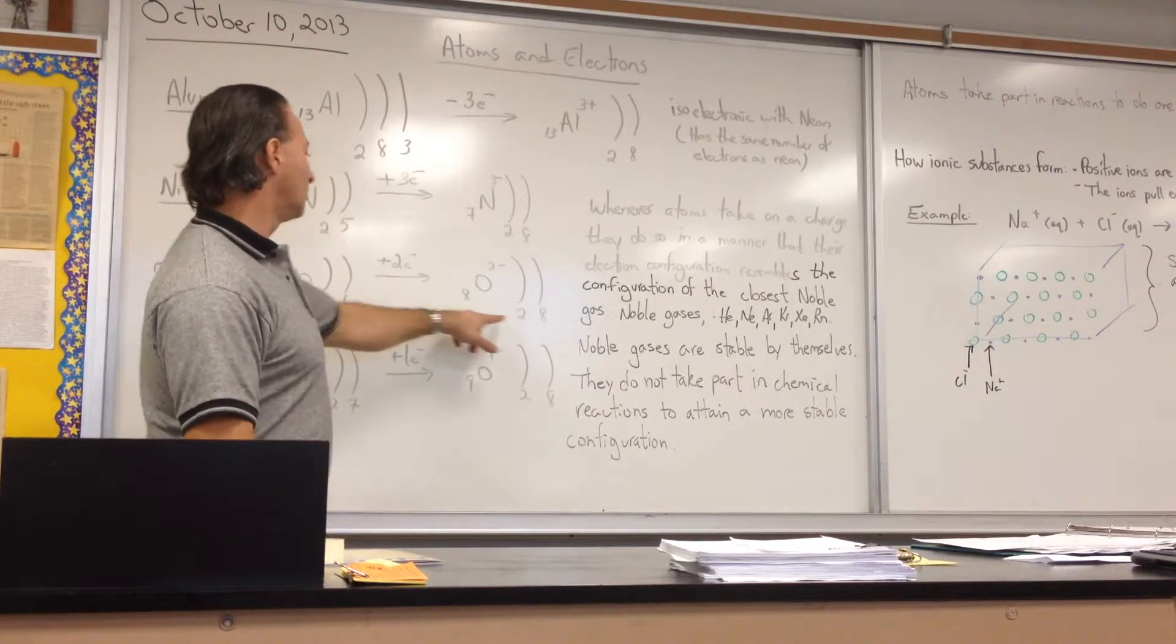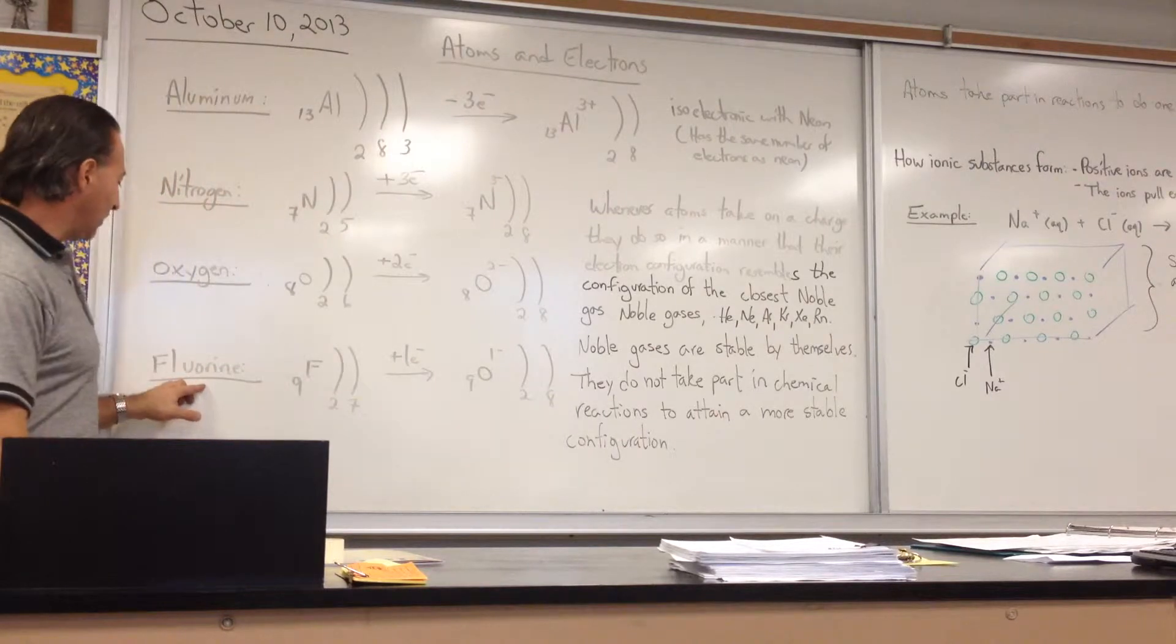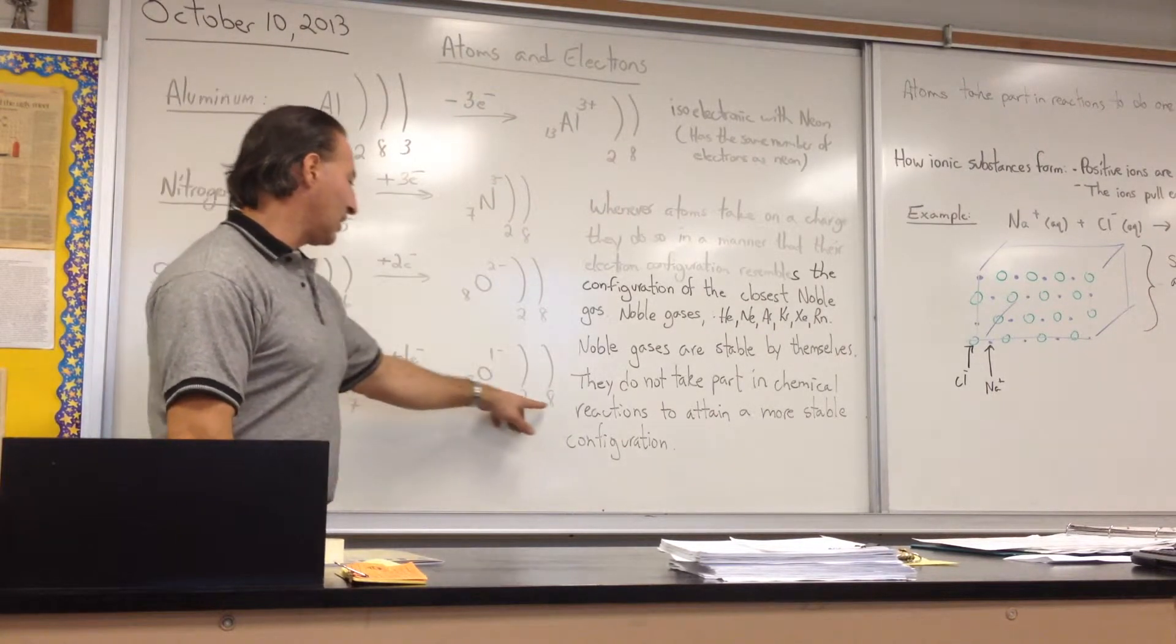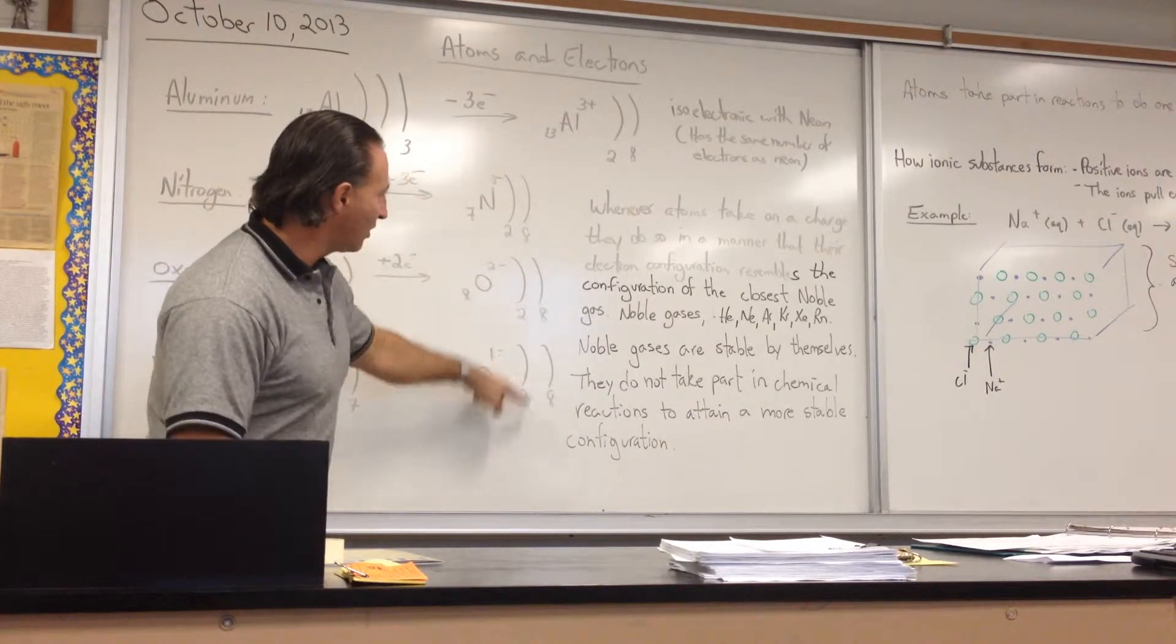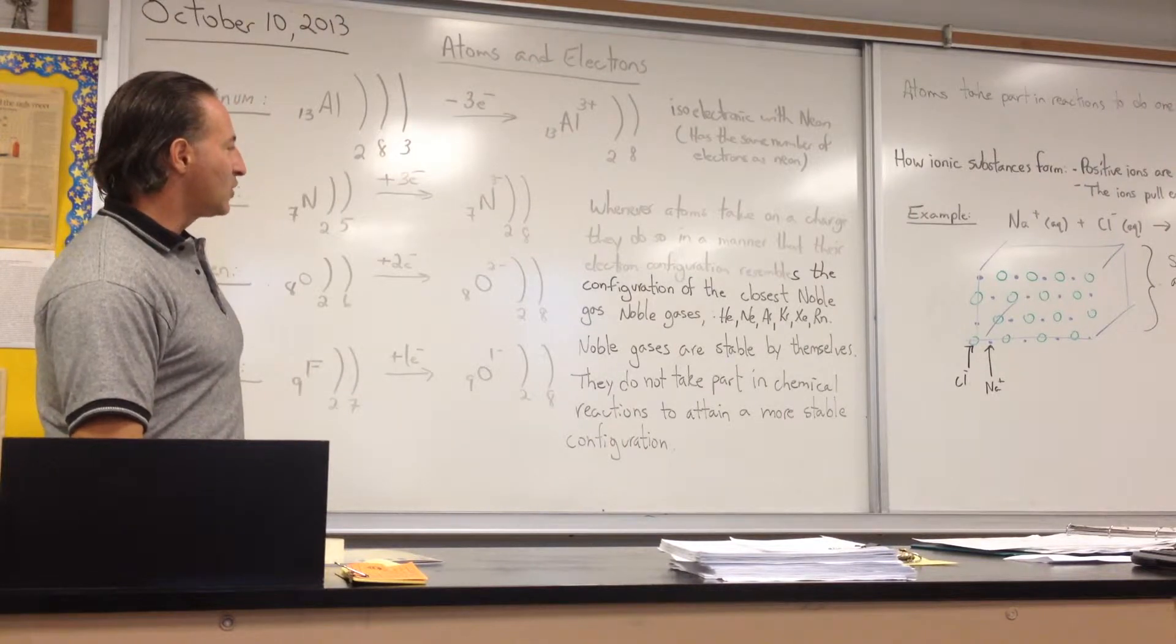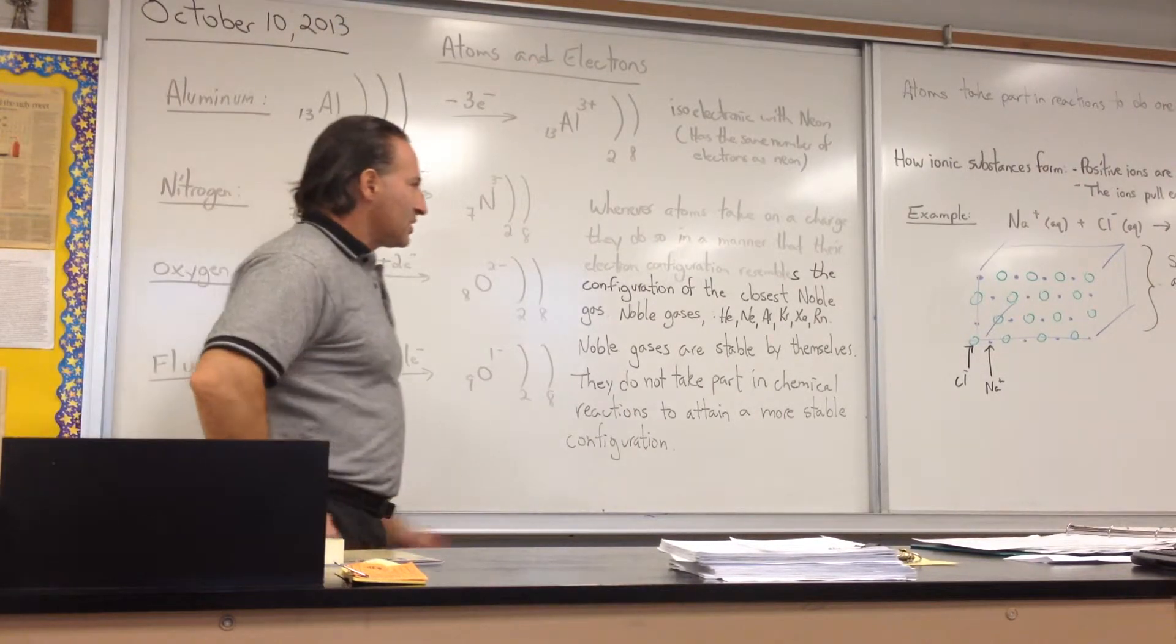Oxygen will gain two, to go from 2,6 to 2,8. And fluoride will gain one, because it has seven in that outer shell, it will gain one to have eight. So, you end up having all four of these atoms end up having the same configuration of electrons as neon, which brings us to the next point.